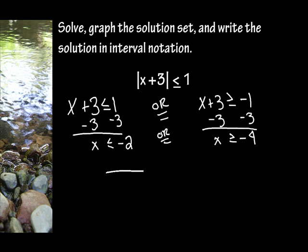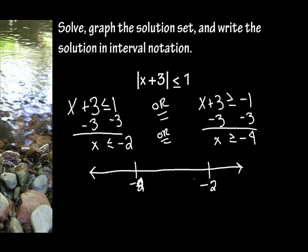So now I'm going to make my number line. You don't have to put every single number on this number line — some instructors want you to, some don't care. What's important is that we're going to be graphing negative 4 and negative 2, because those are the two really important points. We should make this negative 4, and this is negative 2, because negative 4 is smaller than negative 2.